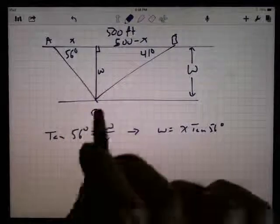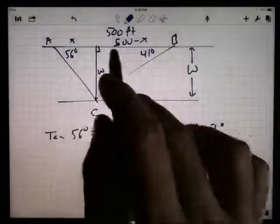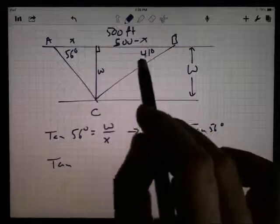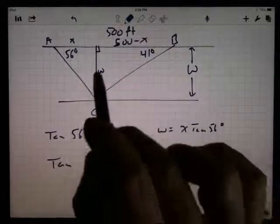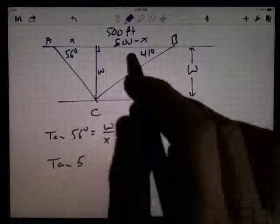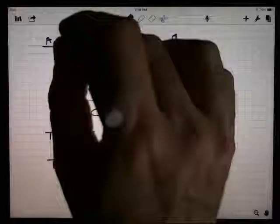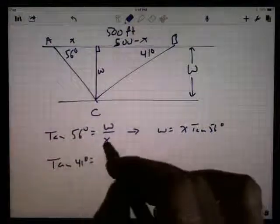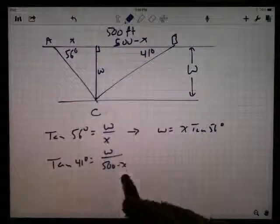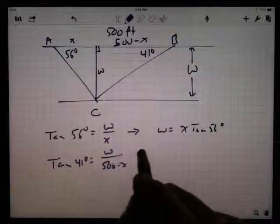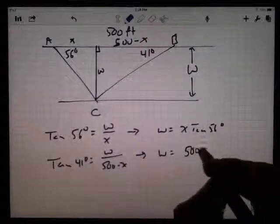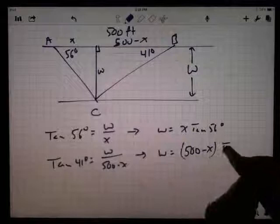So let's see if I can look at this other triangle here. The triangle over here on the right tells me that the tangent, I'm using tangent because I've got this angle, those two sides, the opposite side and the adjacent side. So that's tangent of 41 degrees is equal to the opposite side of W over the adjacent side of 500 minus X. Multiplying, we get that W equals 500 minus X times the tangent of 41 degrees.